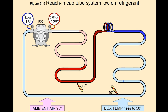Let's take a look at our first troubleshooting problem: a reach-in cap tube system that is low on refrigerant. This system normally operates at 18 degrees evaporator temperature and 125 degree condensing temperature. But now, because of low refrigerant, the pressure has decreased in the system and the evaporator temperature has dropped to 10 degrees.